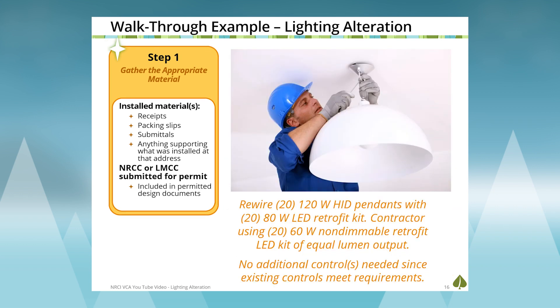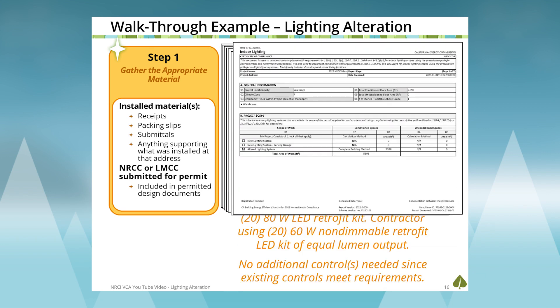Let's start with step one by gathering the appropriate material. Our example project is rewiring 20 120-watt HID pendants within an existing conditioned warehouse and replacing them with 80-watt LED retrofit kits. The contractor found an approved alternative — a 60-watt non-dimmable LED retrofit kit. We'll use the Virtual Compliance Assistant to determine if this alternative is equal or better. We won't need to worry much about controls, as the existing controls meet the minimum requirements of the 2022 code cycle.